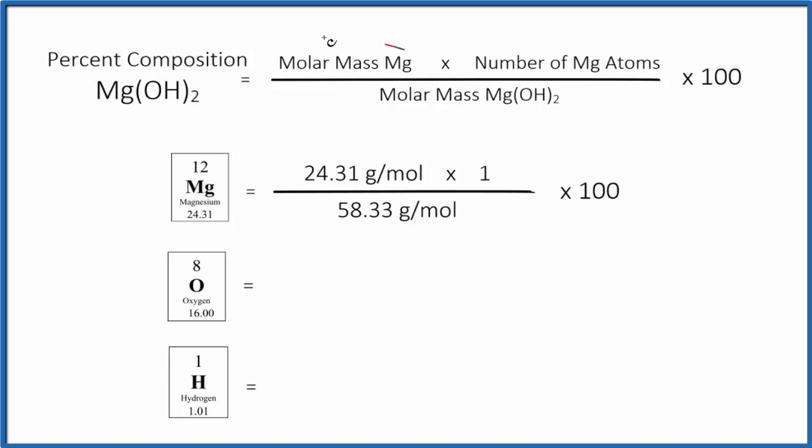For magnesium, we want to find the molar mass for magnesium, or the atomic mass here on the periodic table, 24.31 grams per mole. We're going to multiply that by the number of magnesium atoms. We just have one. So we multiply that by one, and then we divide by the molar mass for the entire compound here, magnesium hydroxide.